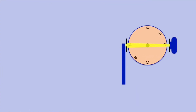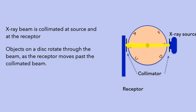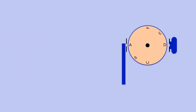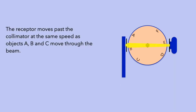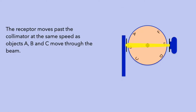To understand the principles of panoramic imaging, let's consider the illustration of a rotating disc. In this setup, X-rays are collimated at the source and immediately before they strike the receptor. Objects on the disc are imaged as they rotate past the collimator. The receptor also moves linearly past the collimator during the exposure cycle. Let's consider the situation where the receptor moves past the collimator at the same speed as objects A, B, and C move through the beam. Images of objects A, B, and C will be recorded when they are closest to the receptor.